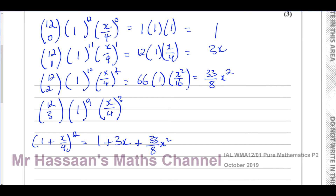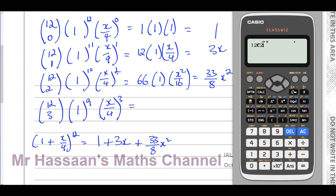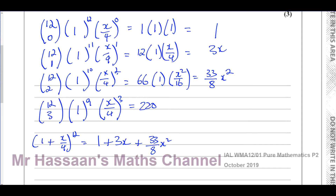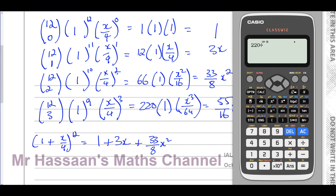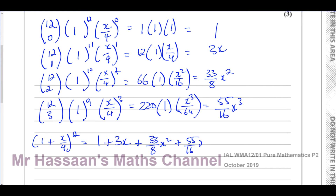For the fourth term, 12C3 gives 220. Then 1^9 is 1, and (x/4)^3 gives x³/64. So 220/64 simplifies — 220 divided by 64 gives 55/16. The fourth term is +55/16 x³. That completes part a. Note: if they had said descending powers of x, the setup would be reversed with 12 starting high and going down.